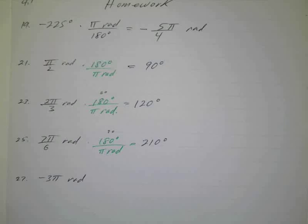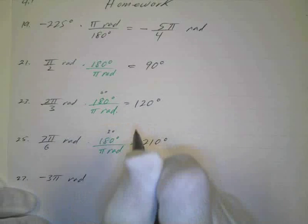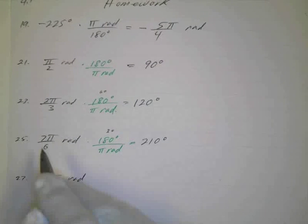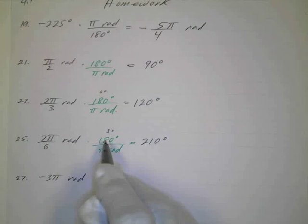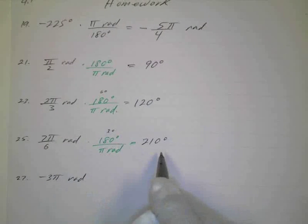Pretty easy, huh? Goes in there 30 times. Cross that out. 6 goes in there 30 times. 7 times 30 is 210.